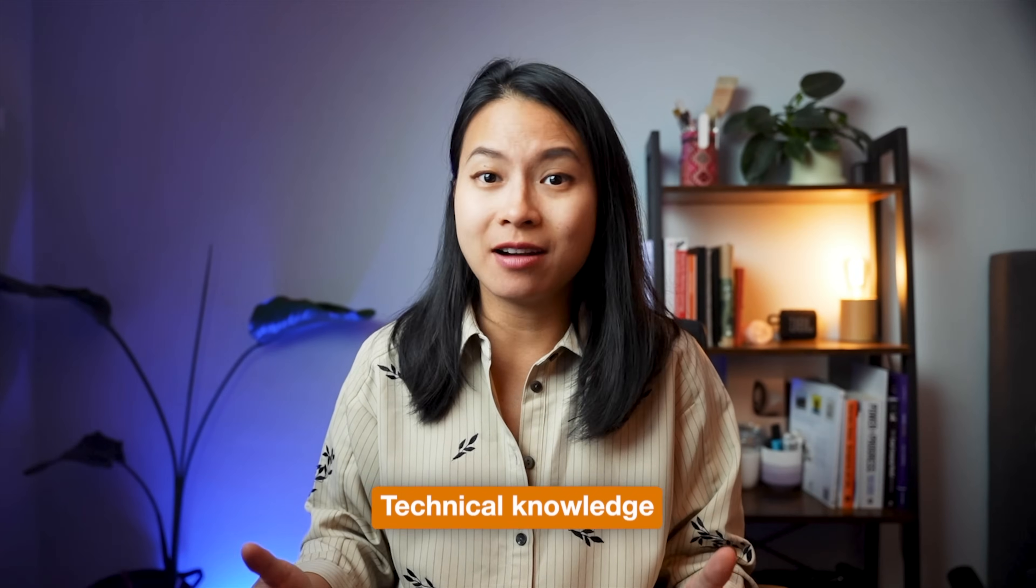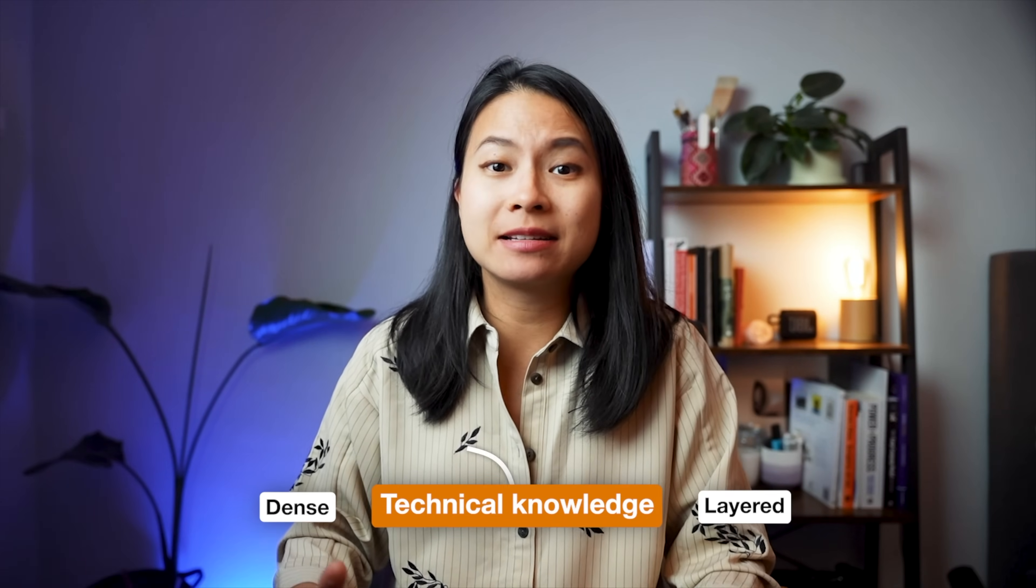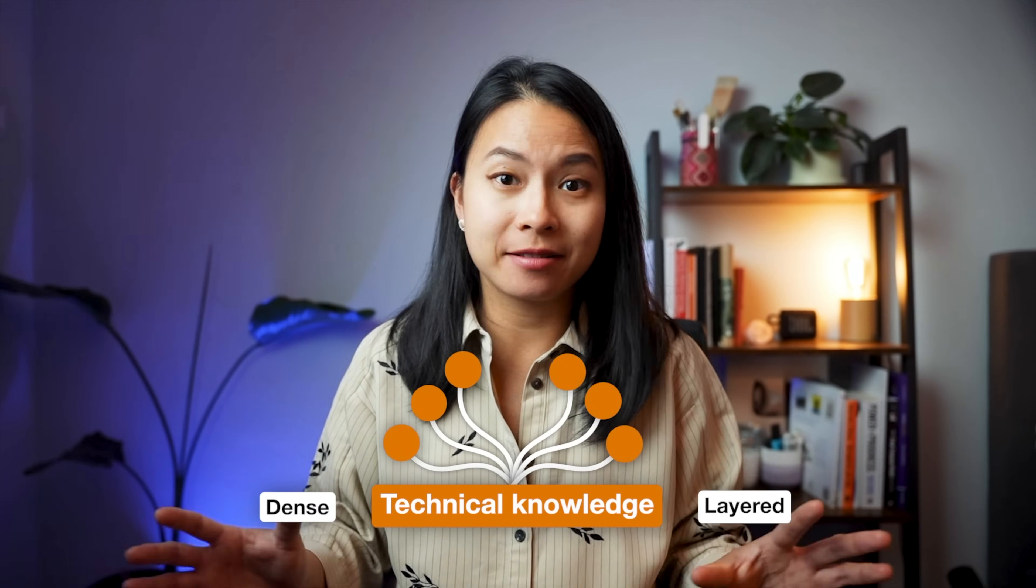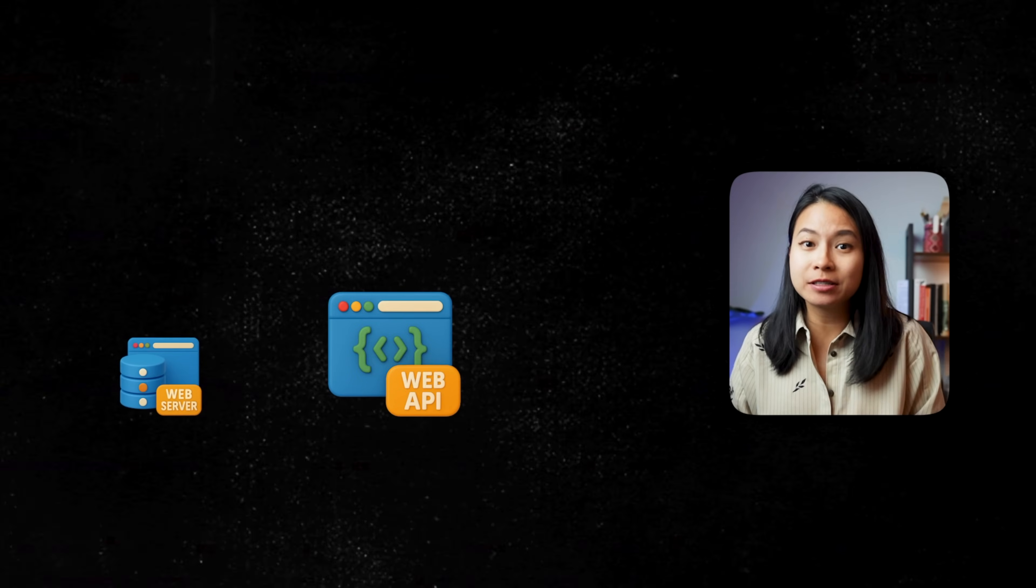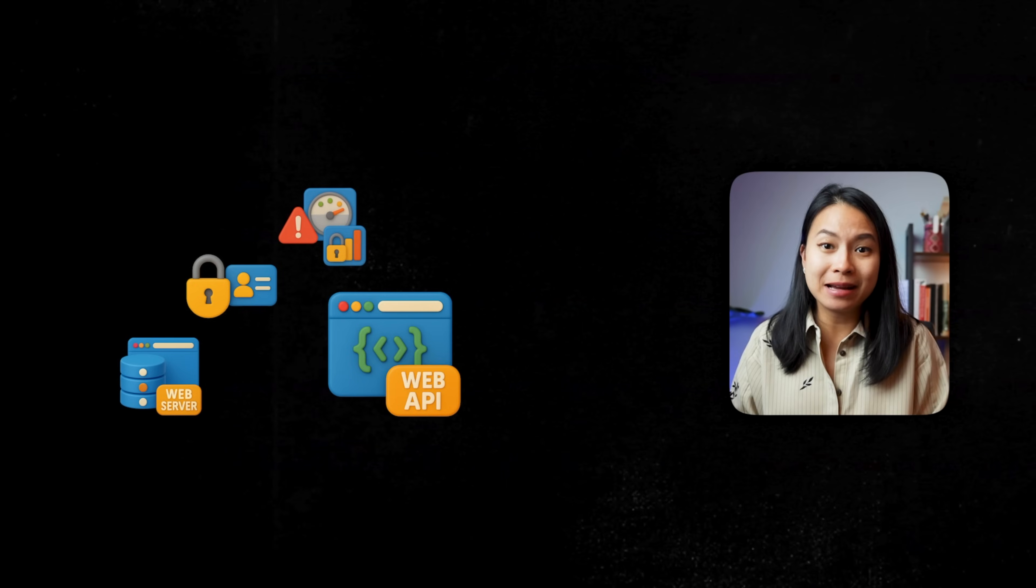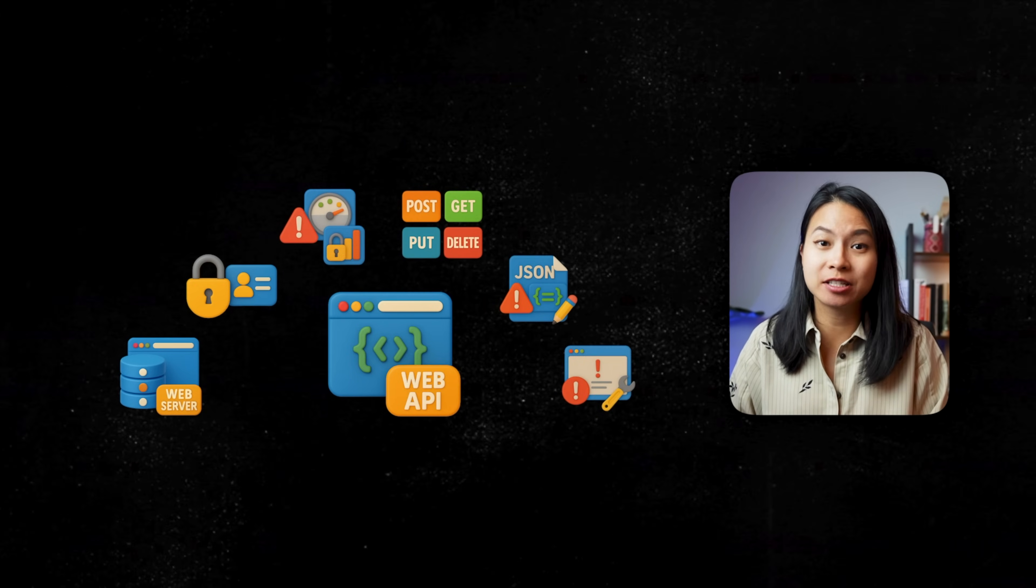The thing about technical knowledge is that it's dense and it's layered. One concept is never about one thing, but it's a web of related things. For example, you learn about web APIs and suddenly you realize you're learning about web servers, authentication, rate limits, different kinds of requests, JSON formatting, error handling, and so on.